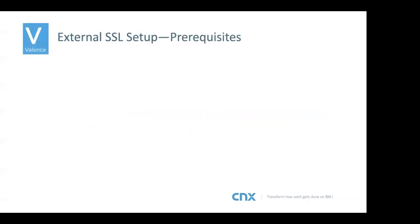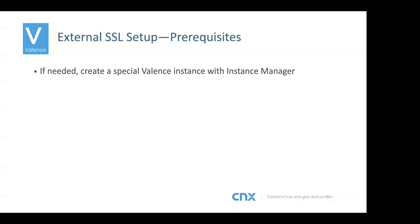Let's go through the prerequisites. You can create a special Valence instance with Instance Manager to apply an SSL certificate for encryption. There's not much point applying an SSL certificate to a Valence instance that's just internal to your network, secured through your firewall with no outside access. Customers often set up Valence instances for outside access — for customer portals, sales people, or vendors — while internal users use a different unsecured instance. You should create that Valence instance first and have it working without the SSL certificate.